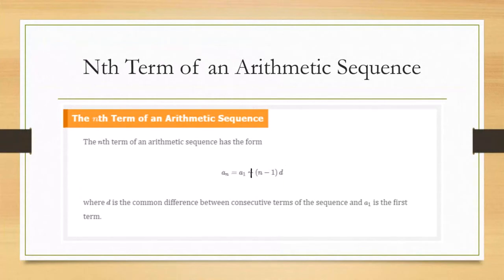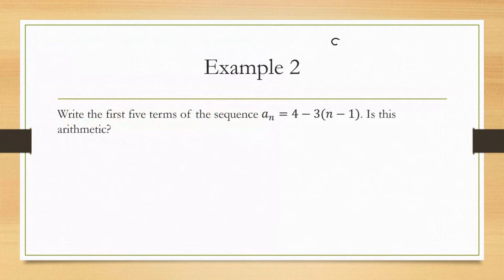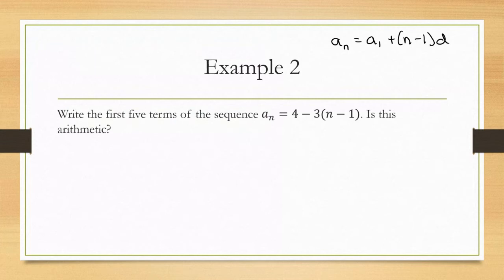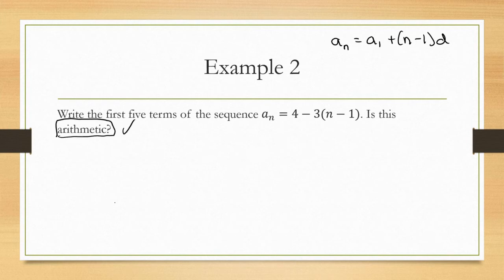The formula is a_n = a_1 + (n-1)·d. For Example 2: write the first five terms of a_n = 4 - 3(n-1) and determine if it's arithmetic. We can say it's arithmetic right away because it's already in the correct form for an arithmetic sequence, with d at the front of (n-1) rather than at the back — but the order of multiplication doesn't matter.